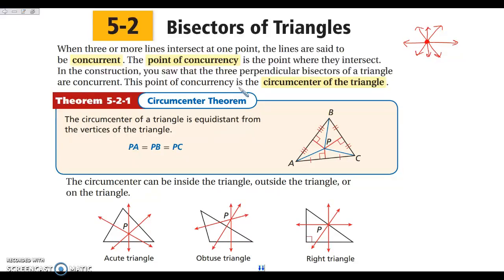In a triangle, if you draw all of the perpendicular bisectors — the red lines here are all the perpendicular bisectors of triangle ABC — we have three sides, so we have one bisector for each side, three total. Those bisectors are concurrent at point P. Point P is called the circumcenter of the triangle, where your perpendicular bisectors meet.